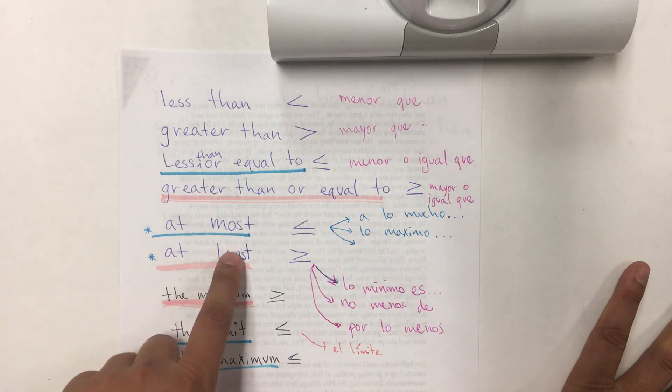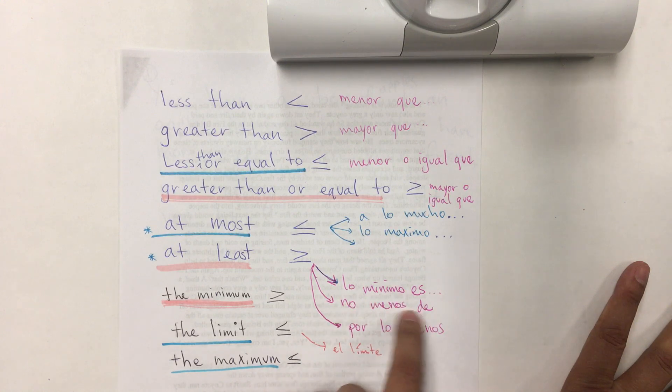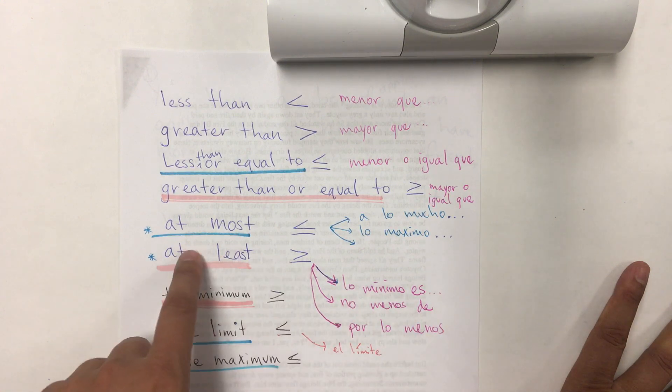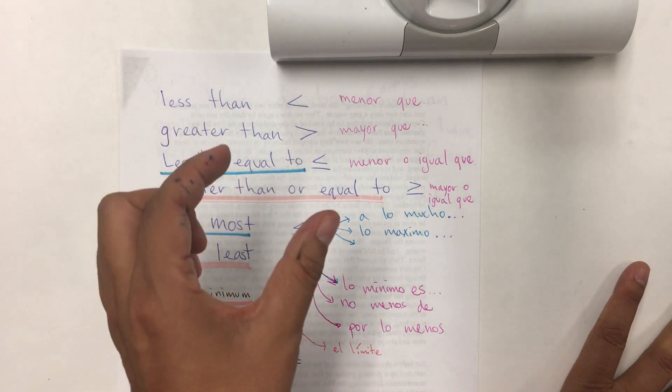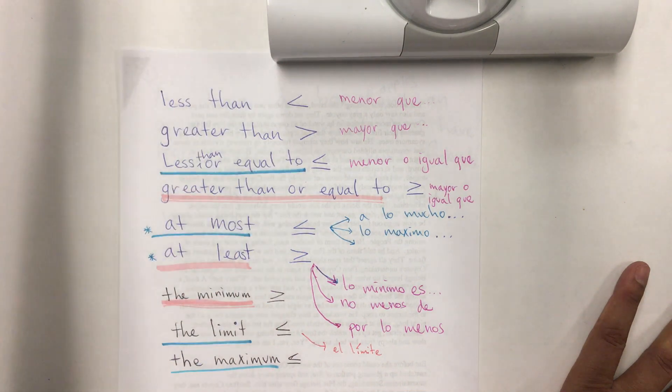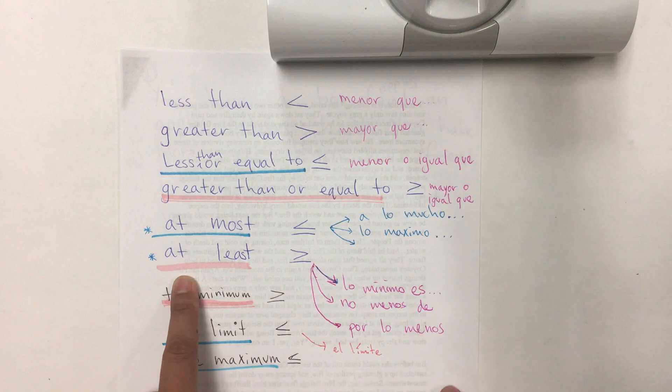And at least, it means lo mínimo es no menos de o por lo menos. If you want to go and find a job, I want to earn at least something per hour. I want that much or more. So, greater or equal than.